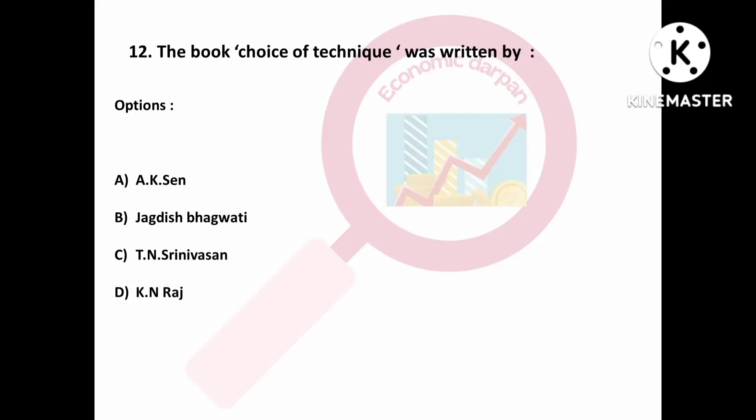Question number twelve is: the book 'Choice of Technique' was written by — Option A: A.K. Sen; Option B: Jagdish Bhagwati; Option C: T.N. Srinivasan; Option D: K.N. Raj. The book 'Choice of Technique' was written by A.K. Sen.